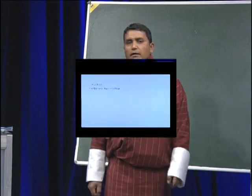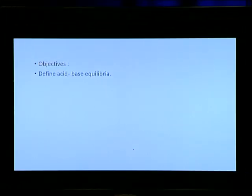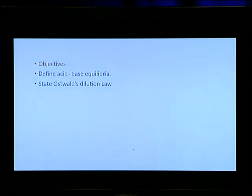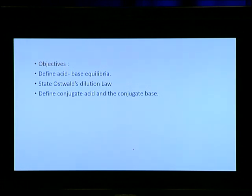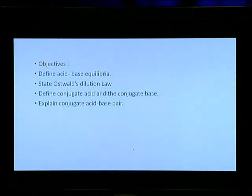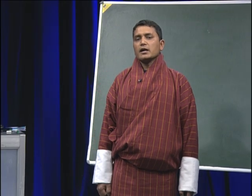Here we go. In today's lesson, the objectives that we are going to fulfill are: define what is acid-base equilibria, state Ostwald's dilution law, define conjugate acid and the conjugate base, and explain conjugate acid-base pair. These are the objectives we are going to fulfill towards the end of our today's lesson on acid-base equilibria.